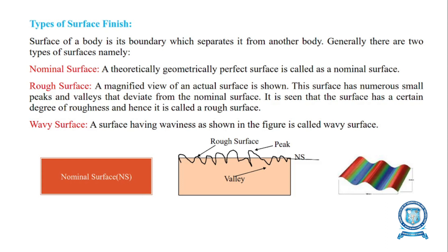There are three different types of surface finish: nominal surface, rough surface, and wavy surface. A nominal surface is a perfect surface. The second type is the rough surface — the figure shows the rough surface, and we can identify the peaks of the rough surface and the waviness of the rough surface. A surface with a certain degree of roughness is called a rough surface.